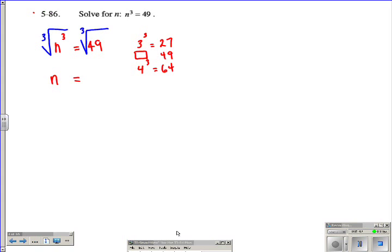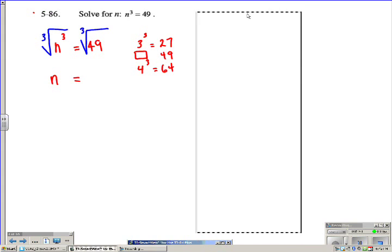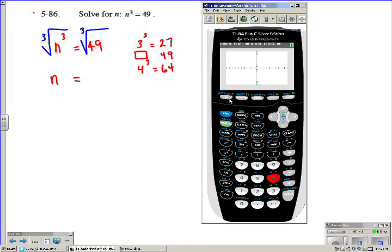So one way we can do this with our calculator is we could say, let's go in and simply do the cube root of 49, which if we press math,